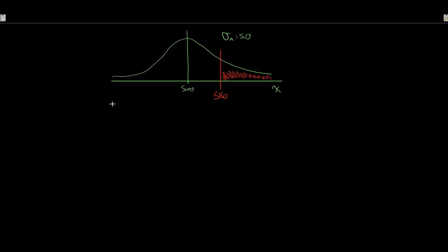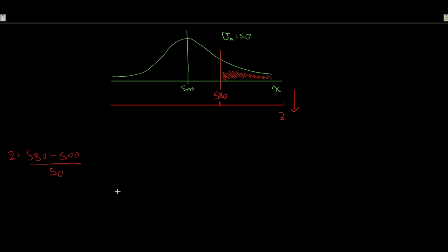The way we would typically do this is convert our X to a Z. Z is our random variable minus our mean divided by our standard deviation. So Z = (580 - 500) / 50. We get 80 over 50, which works out to be 1.60.